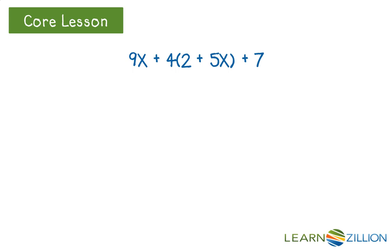This means we cannot start adding from left to right yet. How would we expand the expression 4 times the quantity of 2 plus 5x? Remember, we are multiplying both terms by 4, so our new expression would be 8 plus 20x. We place this expanded expression in the exact same spot that it was before, so we don't change the value of the expression. So now we have the expression 9x plus 8 plus 20x plus 7. This is equivalent to our original expression, but can be simplified even more.